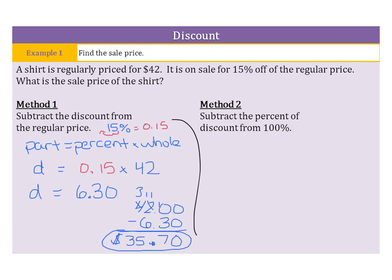Now, what if we look at a different method, but one that's also similar? This involves subtracting the percent of the discount, 15%, from 100%. So, if we take our 100% minus our 15%, we get 85%. Now, what that 85% represents, once we multiply that by our 42, 85% of 42 is our sale price.